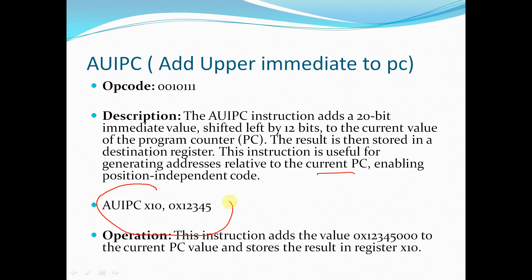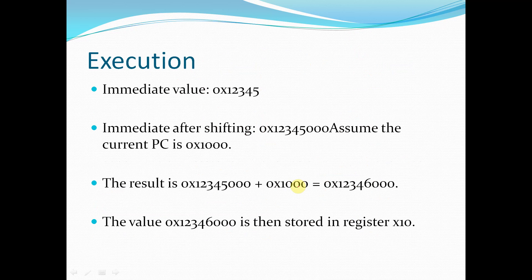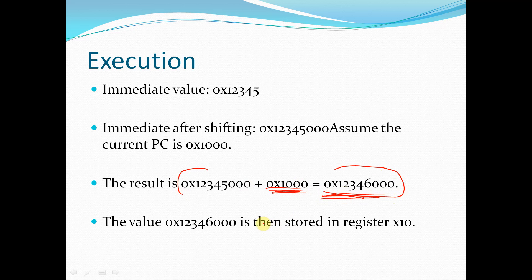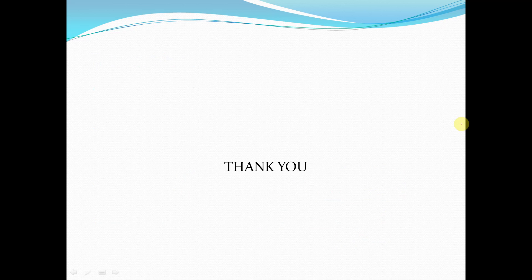The instruction format for AUIPC is: AUIPC x1, 0x12345. This instruction adds the value 0x12345 to the current PC value and stores the result in register x1. For example, if the current value of PC is 0x13000 and the immediate value is 0x12345, the result stored in the destination register is 0x12346000. These are the two types of U-type instructions in RISC-V architecture — LUI and AUIPC — both simple and easy to execute and understand.